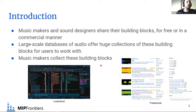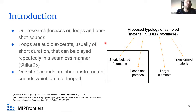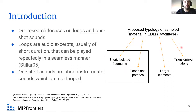A very common issue is that music makers collect these building blocks and end up with super large sample collections that become unmanageable. Our research focuses on two specific types of sampled material: short isolated fragments — one-shots — and loops and phrases. This is a typology of sampled material in electronic dance music, which also contains larger elements like a cappella and transformed material.